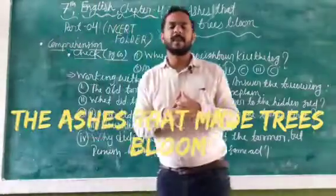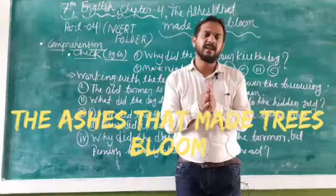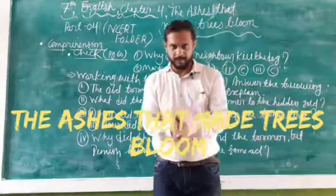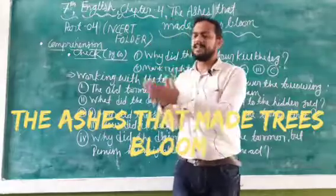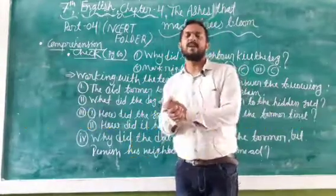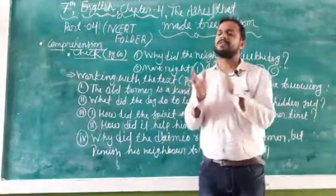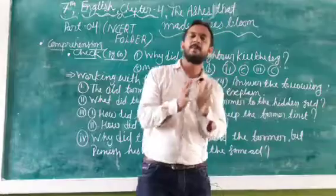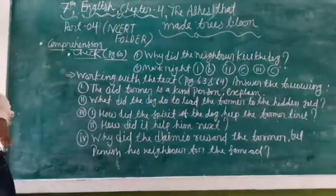Hello, good morning, welcome back dears. In our previous part, we have understood the story of dog Muko, and the name of the lesson was 'The Ashes That Made the Trees Bloom'. In this part, we are going to deal with working with the text — we will solve the comprehension answers. Please keep your book open; we are solving lesson number four comprehension answers.